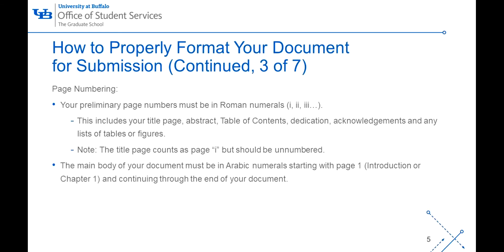When it comes to numbering your pages, your preliminary pages must have Roman numeral page numbers. The title page, abstract, table of contents, dedication, acknowledgments, and any lists of tables or figures are considered preliminary pages. Please note that the title page counts as Roman numeral page 1, but must remain unnumbered. The main body of your document, which usually begins with the introduction or chapter 1, must be in Arabic numerals starting with page 1 and continue through the end of your document.